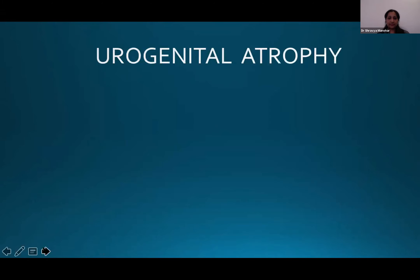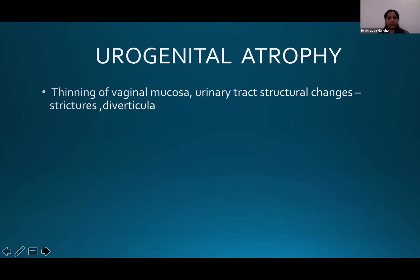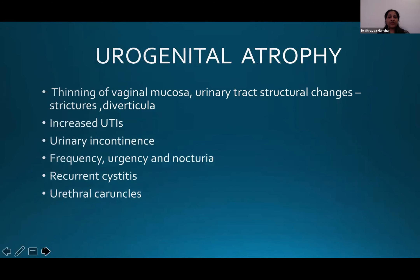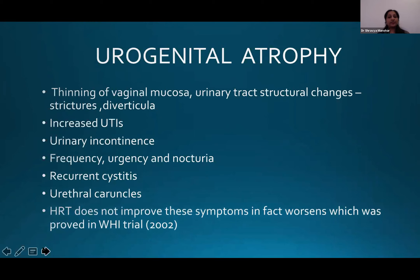Neurogenital atrophy occurs because of thinning of the vaginal mucosa and urinary tract structural changes such as strictures and diverticula. This in turn increases urinary tract infections, incontinence, frequency, urgency, recurrent cystitis, and urethral caruncles. HRT has in no way proven to help these symptoms; in fact, the WHI trial in 2002 proved otherwise.